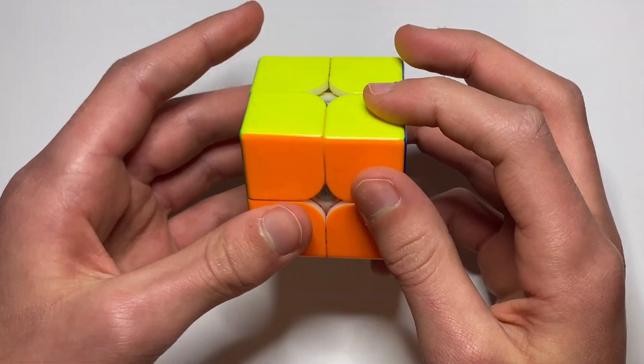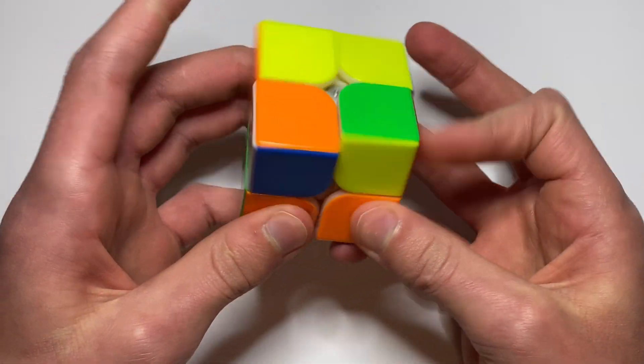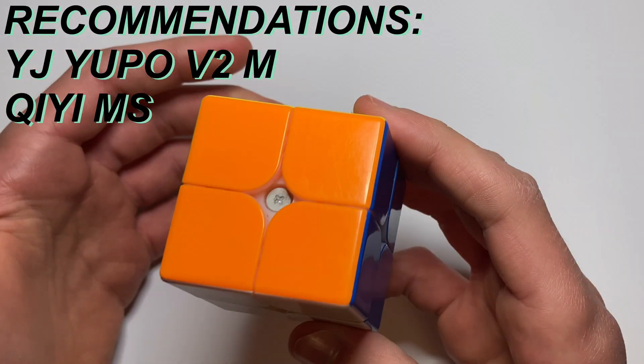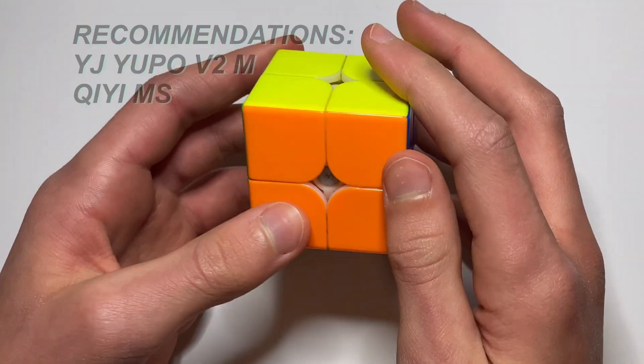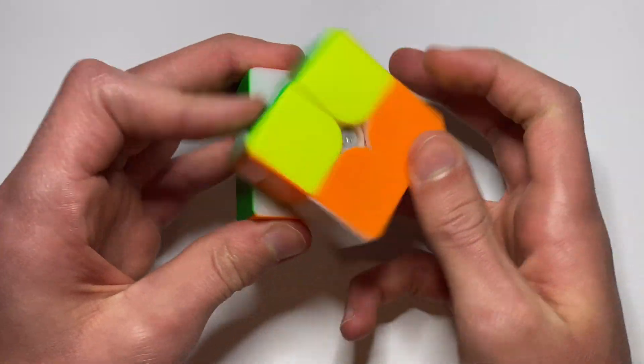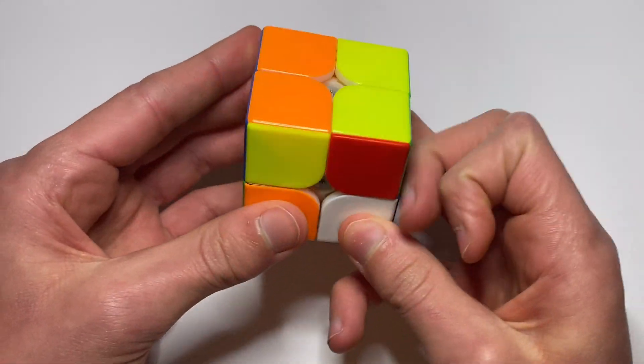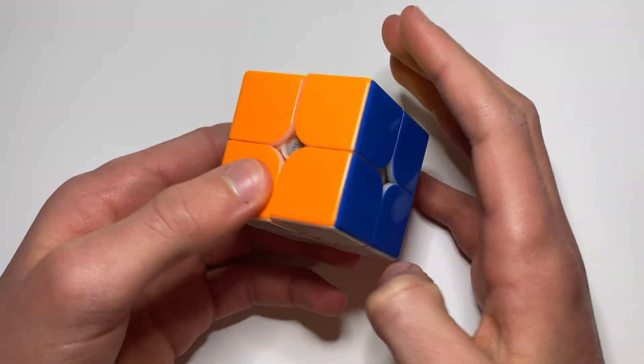Now what I would recommend is if you're getting a budget 2x2, I'd either recommend the YJ YuPo, which is the one that I'm using for this video, or the QiYi MS. Both are amazing 2x2s that are at low price, so I'd recommend either of those 2x2s. And this video really comes in handy if you're averaging six to eight seconds because then you can really get fast by using these algorithms.